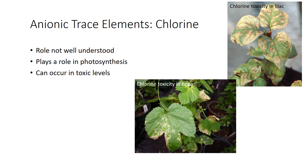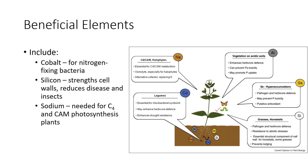Most plants actually contain more chlorine than they really need, and toxicity is a bigger issue than deficiency. In salted soils of arid regions and in potted plants, chlorine toxicity can occur in such sensitive species as most fruit trees, beans, and cotton.